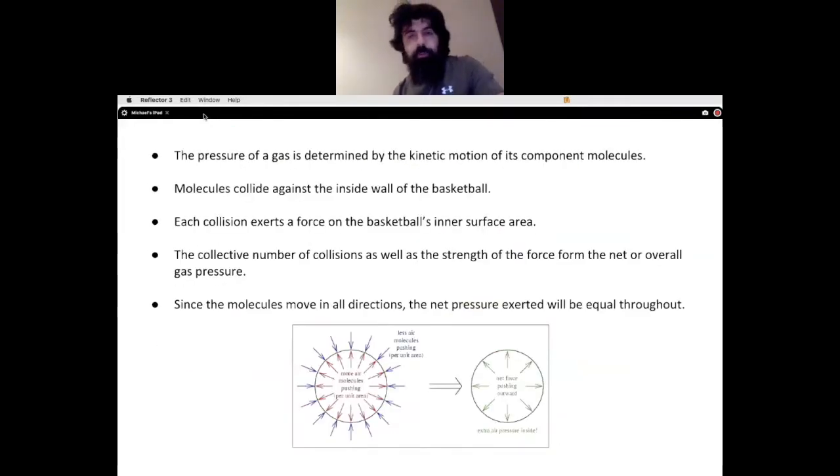The pressure of a gas is determined by the kinetic motion of its component molecules. The molecules collide against the inside wall of an object. Here we've got a basketball. Inside, we've got air molecules that are pushing against the inside of the ball, but we also have pressure being exerted from the outside of the ball.